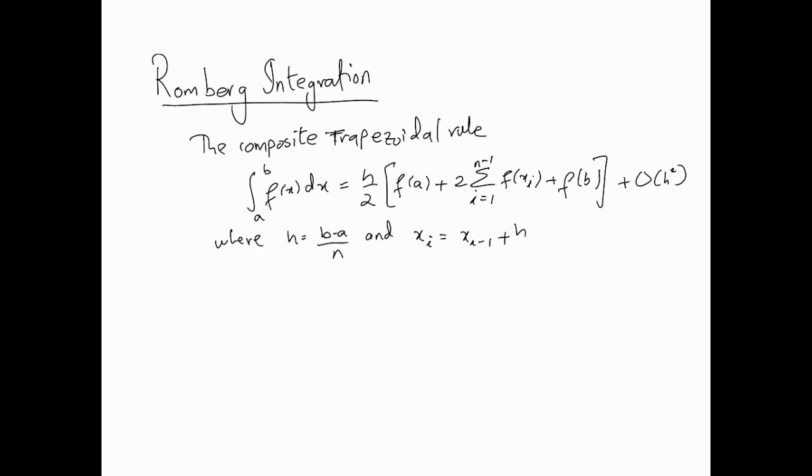So to start with, the Romberg integration is more a technique that is independent of the integration rule that we use. For instance, trapezoidal could be used as a base. You could also use the one-third Simpson or the three-eighth Simpson or any other that the Newton-Cotes might generate.